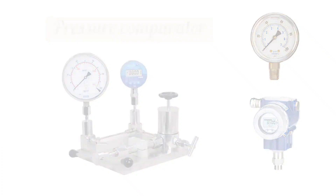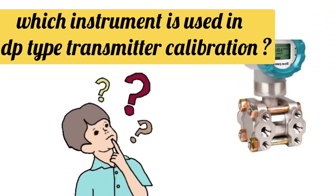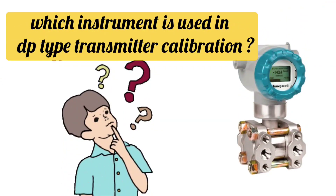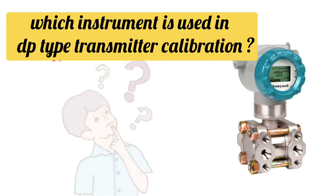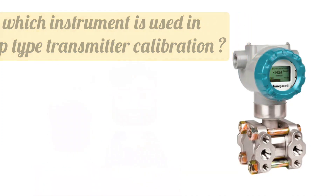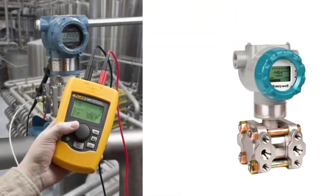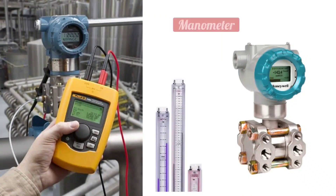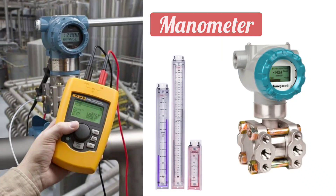Sometimes you are also asked: which instrument is used for calibration of DP type transmitters? For calibration of DP type transmitters, a manometer is used.